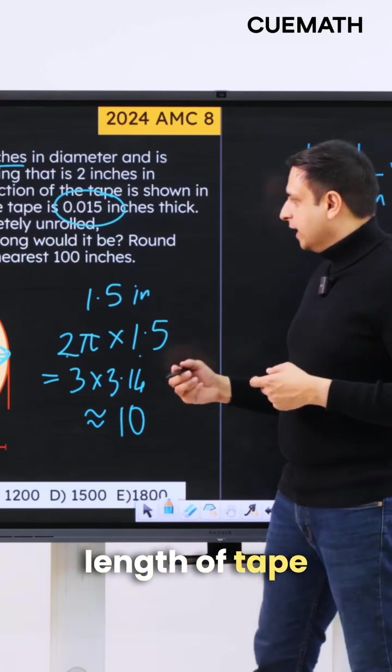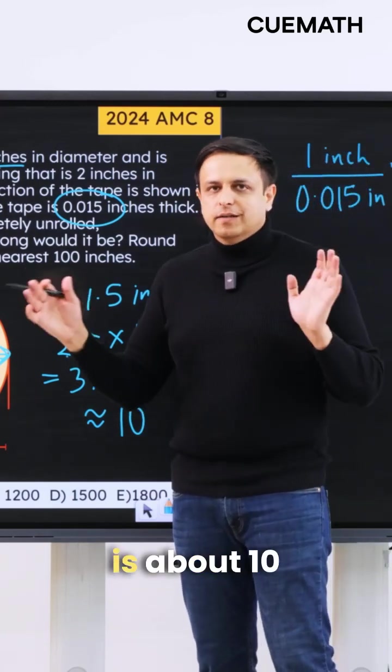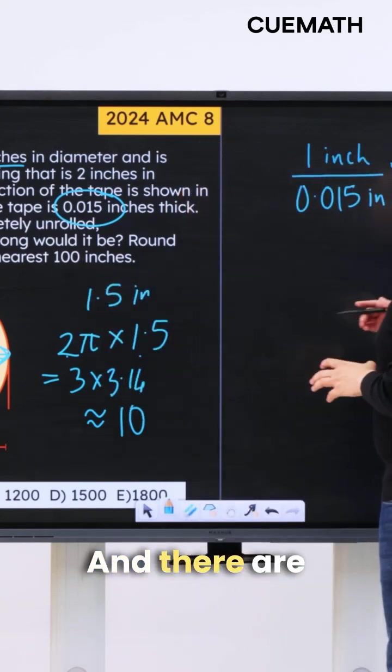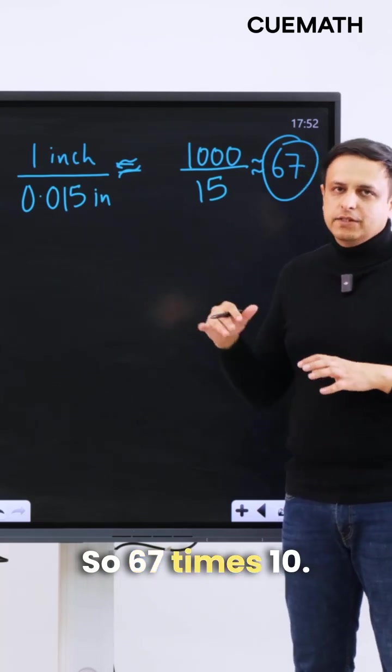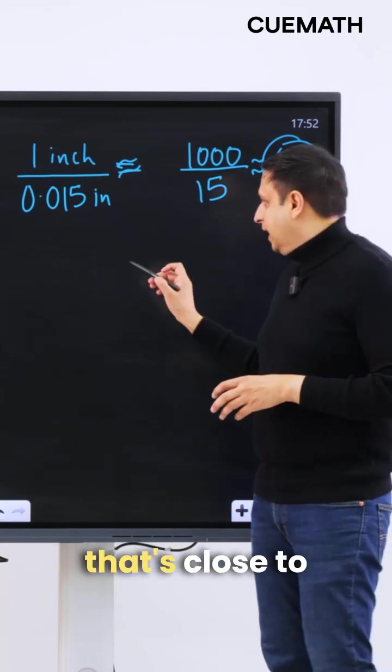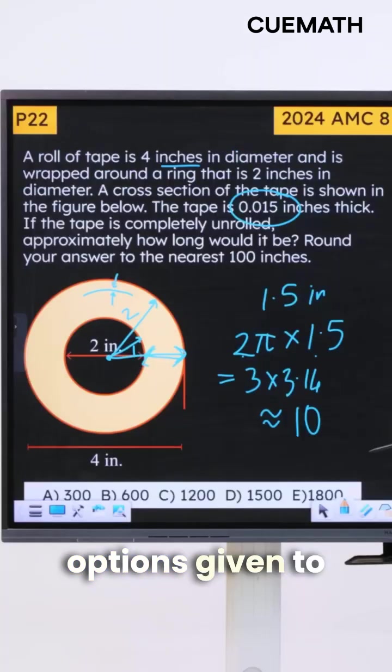So the average length of tape I get at every unroll is about 10 inches, and there are a total of 67 unrolls. So 67 times 10, somewhere about that, is close to which of the options given to us.